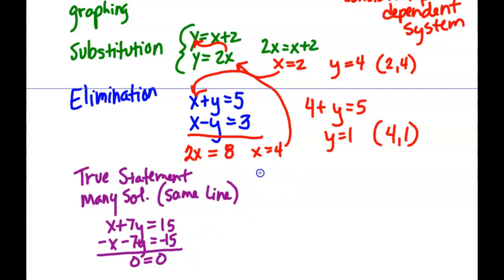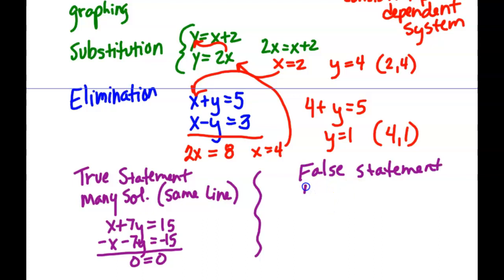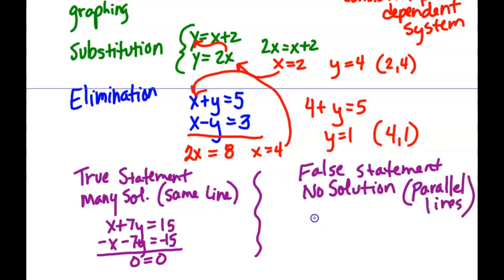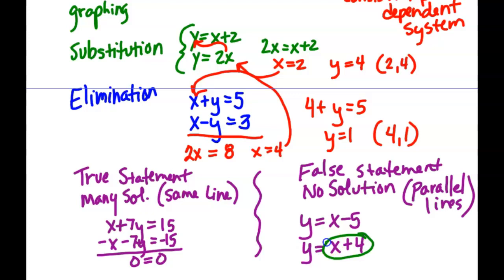The other option is if you get a false statement — for example, 7 equals 5 — then there is no solution. What does that mean about the lines? How can two lines never intersect? They're parallel. That might look like y equals x minus 5 and y equals x plus 4. If you did substitution and put x plus 4 in for y, you'd have x plus 4 equals x minus 5. Subtract x from both sides and you get 4 equals negative 5, which is not true — so those lines are parallel.